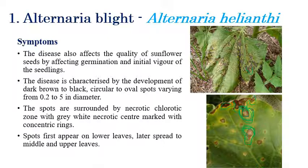Initially the symptoms appear on the lower surface of leaves — chlorotic or necrotic spots with concentric rings on the lower surface. Later they spread to the middle regions and then to the upper leaves, where spots can be observed on the upper surface as well.